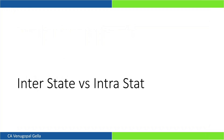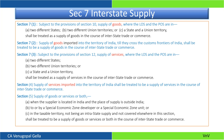Now, what is very important is understanding the difference between interstate and intrastate transactions. Section 7 of the IGST Act describes what constitutes an interstate transaction. If it is with regards to goods — a transaction between two different states, two different union territories, or one state and another union territory — then it is an interstate supply, meaning IGST needs to be levied.